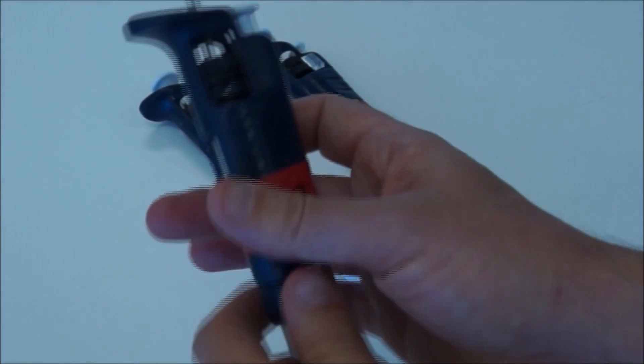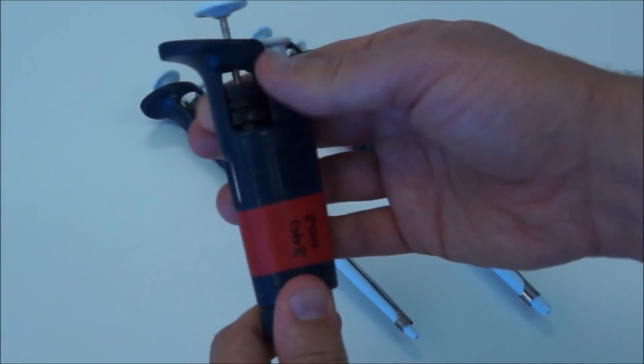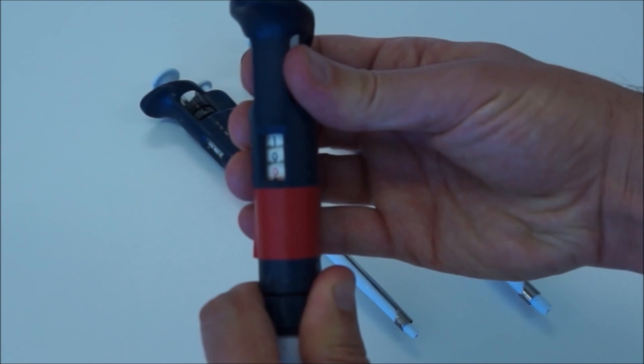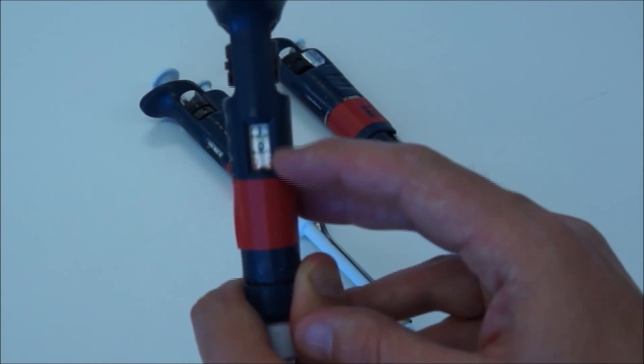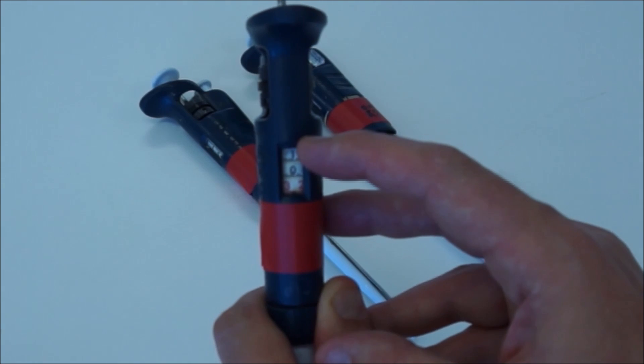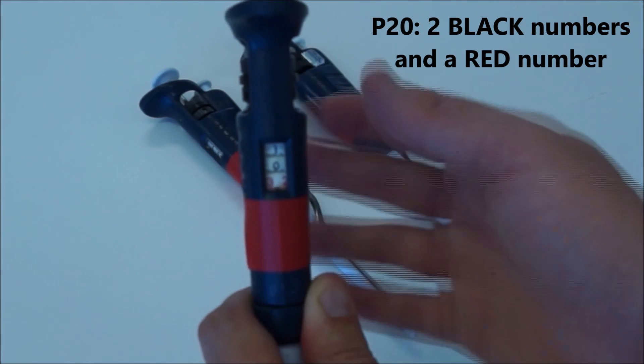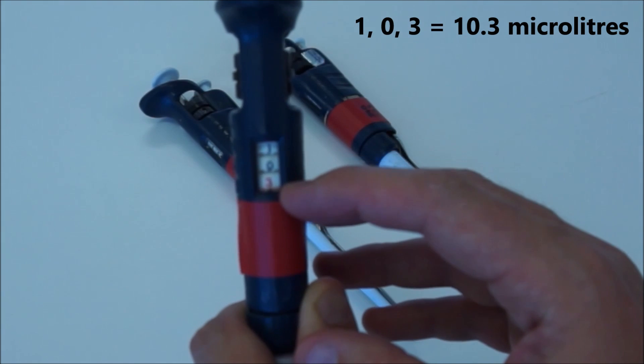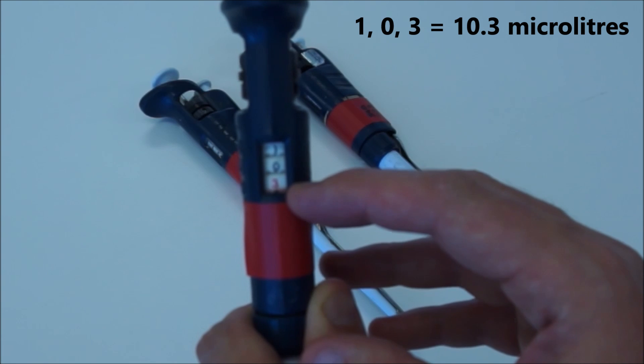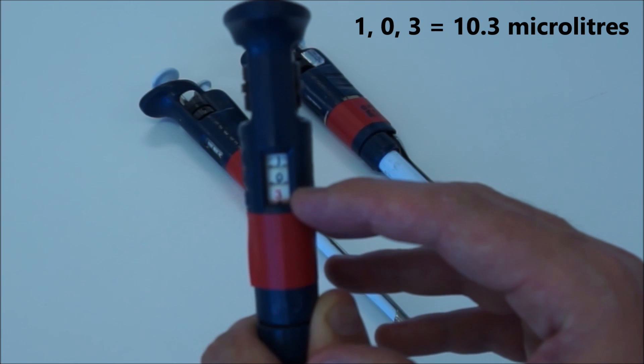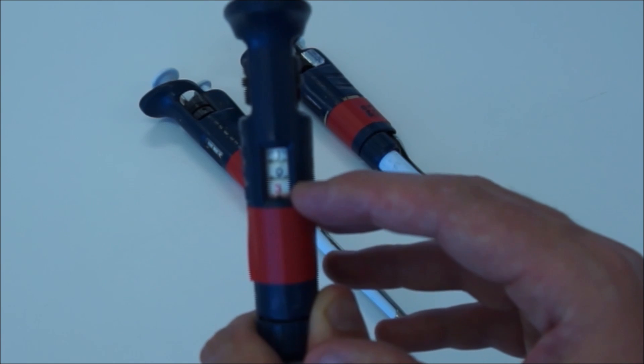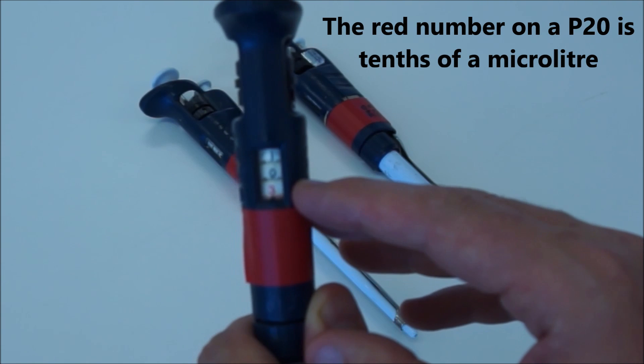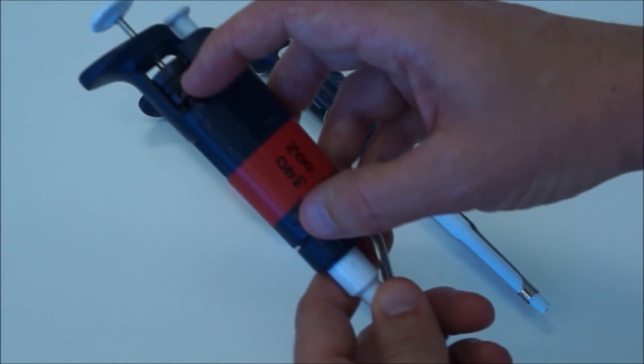Pipettes can be adjusted by using this dial right here. You can turn the dial and it will tell you what kind of volume you're dealing out here in this window. P20s have two black numbers and a red number. It says 103. This P20 is now set to pick up 10.3 microliters. So that third number, the red number, is actually a decimal point of microliters.